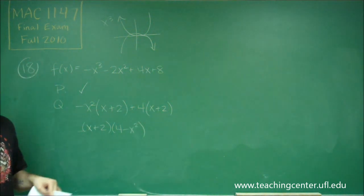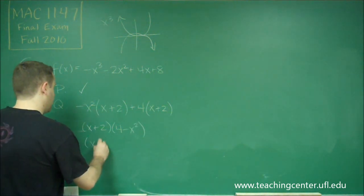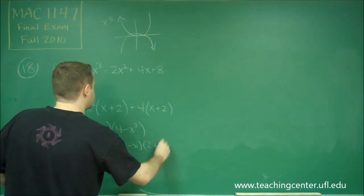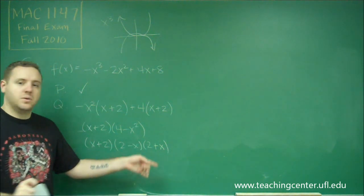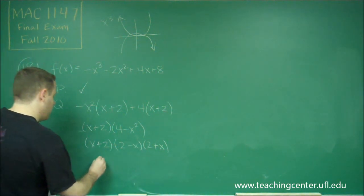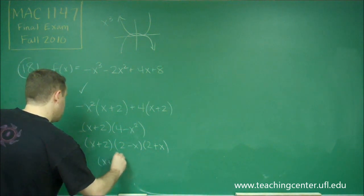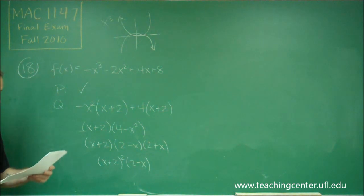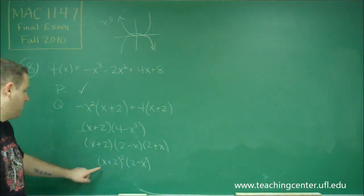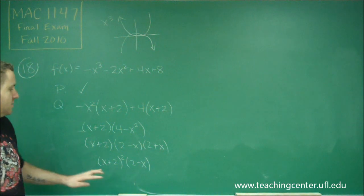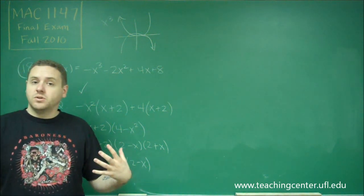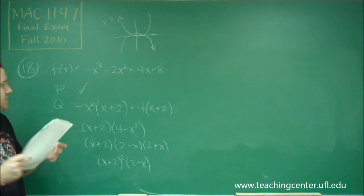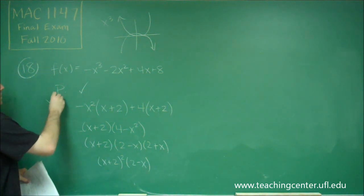So 4 minus x squared is the difference of two squares. That factors into 2 minus x, 2 plus x. And 2 plus x and x plus 2 are the same thing. So we have x plus 2 squared times 2 minus x. You can see here that we don't have three distinct x-intercepts because we have one that's a double root. Our x-intercepts, or our zeros of the function, are negative 2 and 2, and those are the only two we have. That tells us that statement Q is not true.